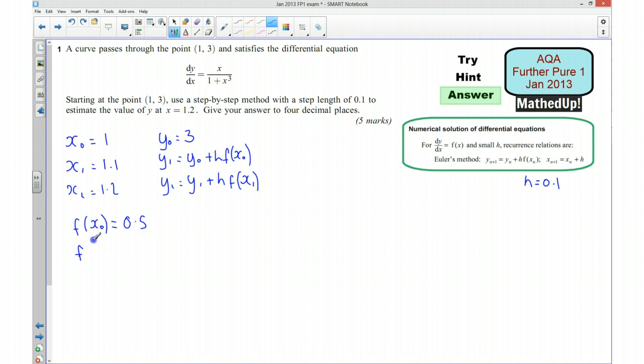I'm also going to work it out for x1, and that's 1.1. So I've got 1.1 over 1 plus 1.1 cubed. And I'll write that down, actually. So I've got 1.1 over 1 plus 1.1 cubed. And that gives me a value of 0.4719005.